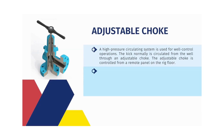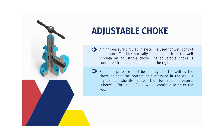A high-pressure circulating system is used for well control operations. The kick normally is circulated from the well through an adjustable choke, which is controlled from a remote panel on the rig floor. Sufficient pressure must be held against the well by the choke so that the bottom hole pressure in the well is maintained slightly above the formation pressure; otherwise, formation fluids would continue to enter the well.